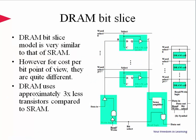DRAM bit cells are very similar to SRAM bit cells or bit slices. However, from a cost point of view, they are quite different. Since SRAM uses latches for storing bits, DRAM uses approximately three times fewer transistors compared to SRAM. For large memory structures or architectures, this makes these two technologies significantly different in terms of cost.